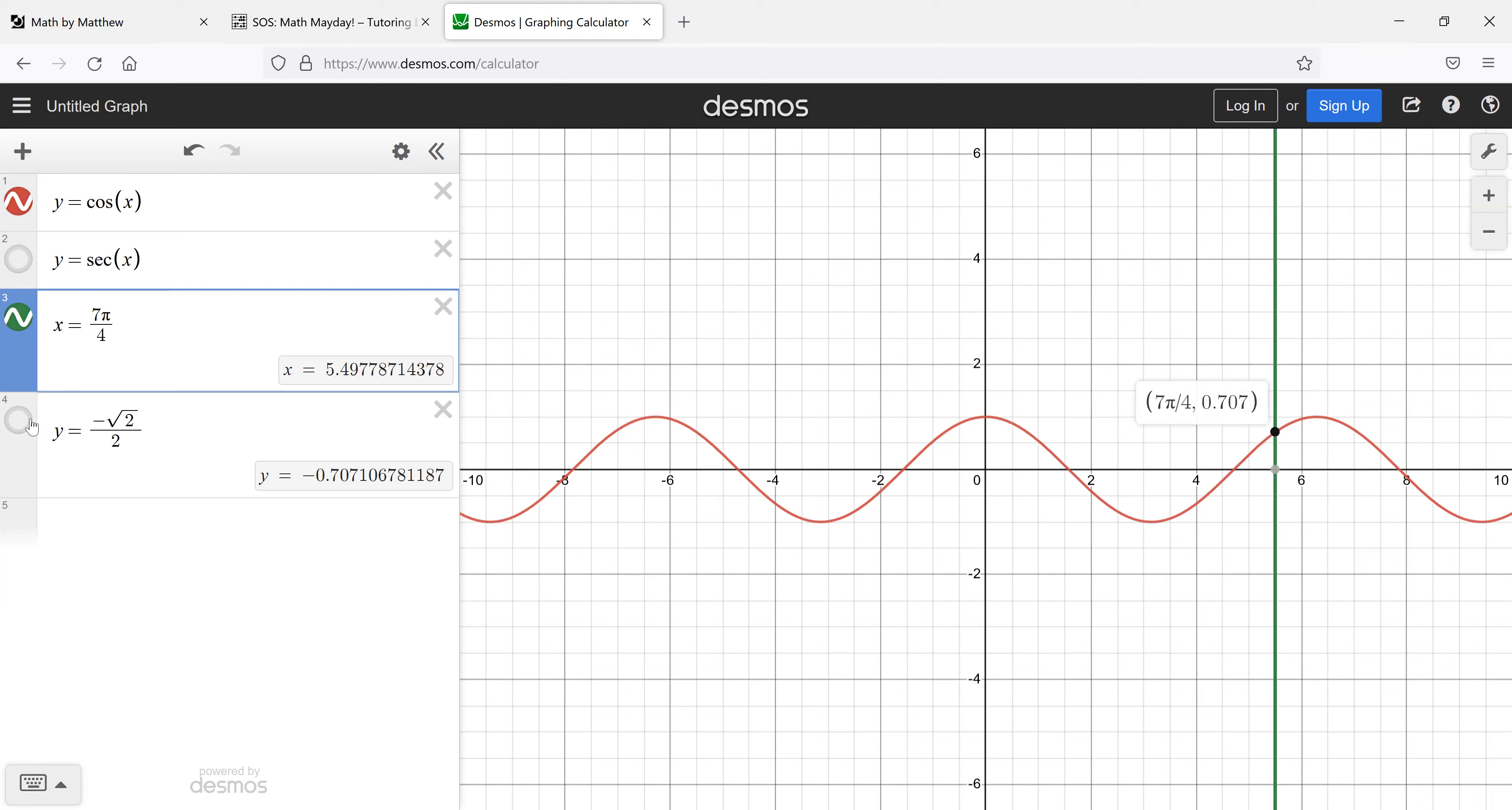How about seven π over four? Any guesses as to what that'll be? You can see now. It repeats square root of two over two. And then if you get back to two π, you're back to one.